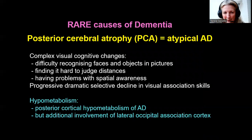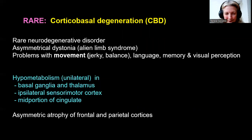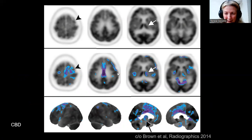This is less of a memory loss — it's more visual decline and complex recognition of faces. There's also cortical basal degeneration, which usually shows hypometabolism affecting the basal ganglia and thalamus, and sometimes the ipsilateral sensory motor cortex — hypometabolism in the thalamus and adjacent cortex with a little bit of frontal hypometabolism. This is very rare.